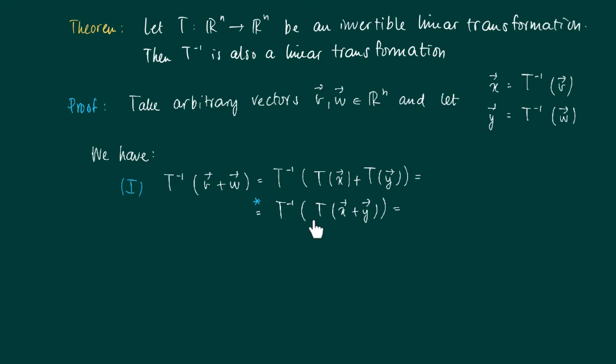Now we have T and the inverse T^(-1), and this amounts to the identity, so we get the vector X plus Y. And X we write T^(-1)(V) and Y we write T^(-1)(W), so actually we have the first property of a linear transformation.